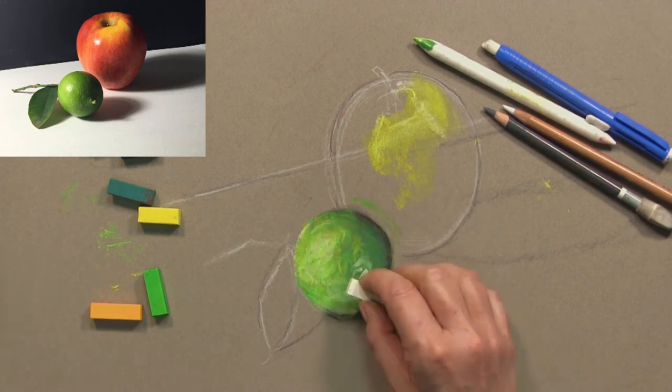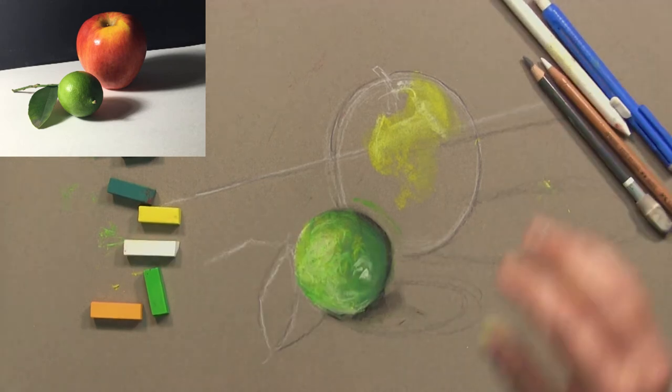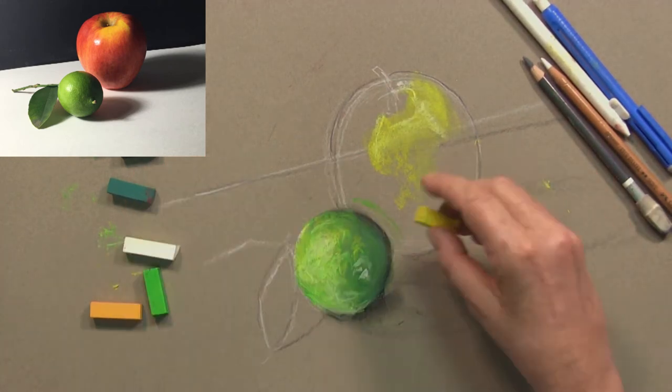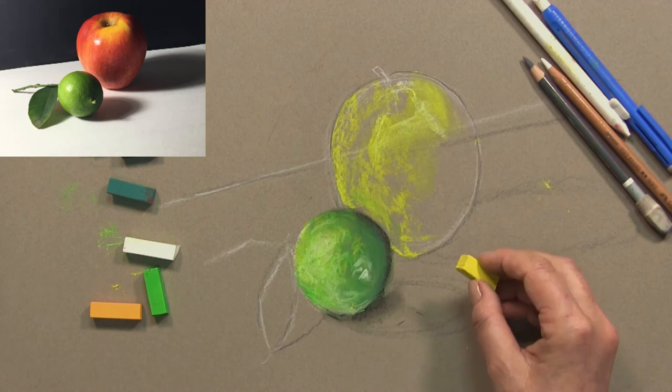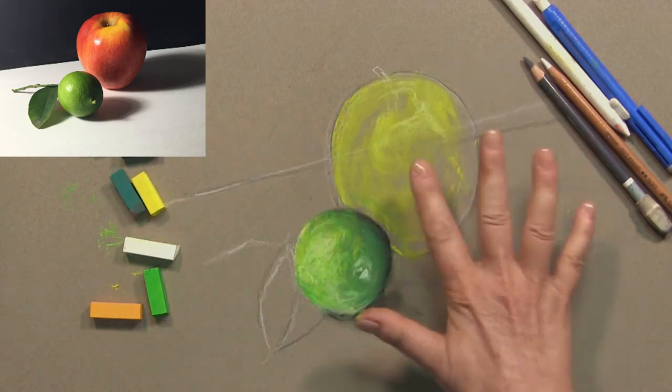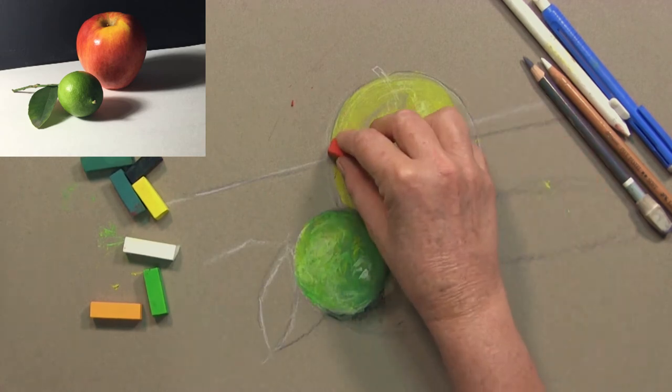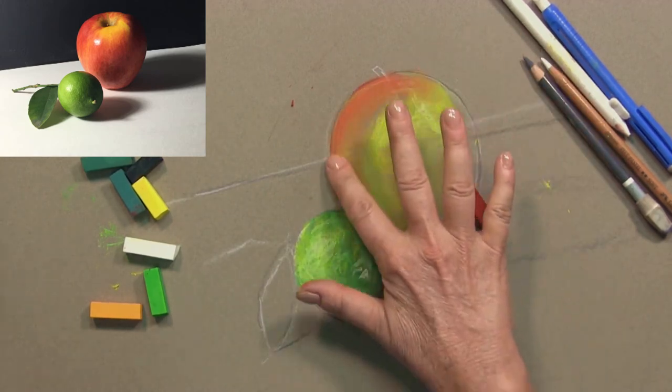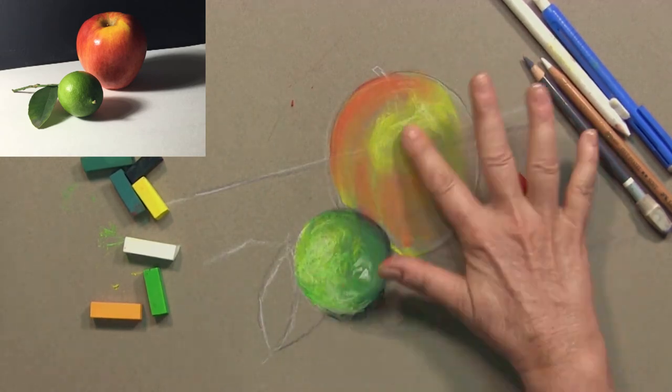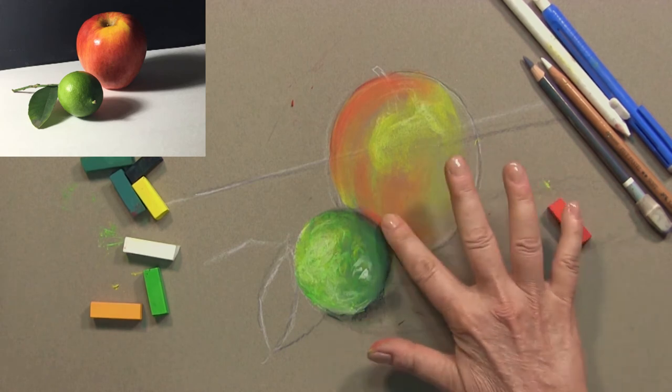Then I'm going to start work on the apple. So what will happen is I'll spray the lime about now and then I'm going to start the apple with the light colors, the yellows, maybe a little bit of white, and I'm going to have to mix some reds and yellows to match the tone of the apple.